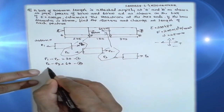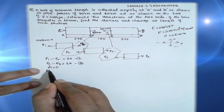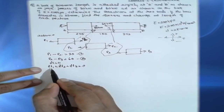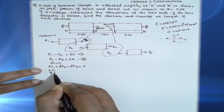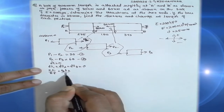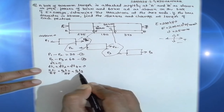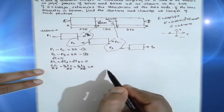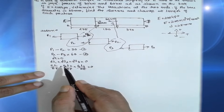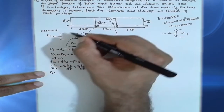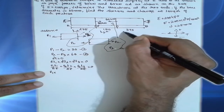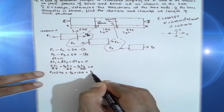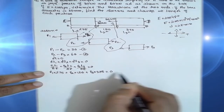From the diagram, since both ends are fixed, delta L is equal to zero. Therefore: delta L1 + delta L2 + delta L3 = 0, which gives P1·L1/AE + P2·L2/AE + P3·L3/AE = 0. Since area and Young's modulus are the same throughout, this simplifies to: P1 × 275 + P2 × 150 + P3 × 375 = 0 — equation three.